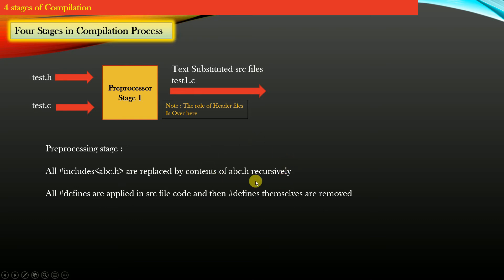For example, abc.h header file may itself hash include other header files. So in the pre-processing stage, all the header files are replaced by their contents, and this process is recursive in case the header file has included other header files.